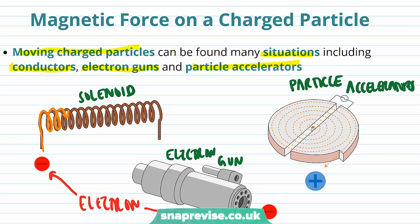In this example, a proton has been accelerated out of the particle accelerator. From our understanding of conductors, in the next few videos we're going to build a knowledge of the forces on single charged particles in a magnetic field.